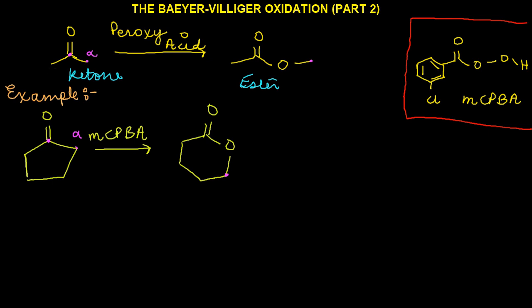Alternatively, you could have picked the other alpha carbon on the left, which is also correct, and drawn the product using that one — inserting the oxygen between that alpha carbon on the left and the carbonyl carbon — which would have led to a compound like this. And now you see that we've inserted our oxygen between the alpha carbon on the left, which is now over here, and the carbonyl carbon. Both of these products are fine; they're actually identical, flipped images of each other, so it doesn't matter whether you draw one or the other.